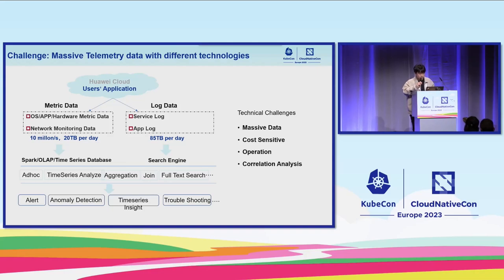There are two types of telemetry data on Huawei Cloud. First is metric data, which describes the status of hardware and software — about 10 million data points per second, with a total size of about 20 petabytes per day. The other is log data, at about 85 terabytes per day. This data is used for real-time analysis for monitoring, such as alerting, anomaly detection, time series insight, and troubleshooting.